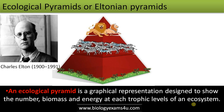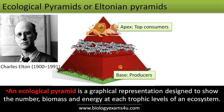It was first described by Charles Elton, also called the Eltonian pyramid or food pyramid, where the producers form the base and top consumers form the apex. Each step in this food chain is called a trophic level — the position of organisms in the food chain.